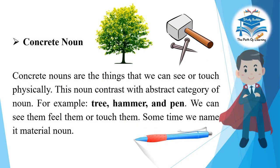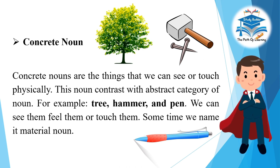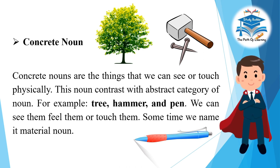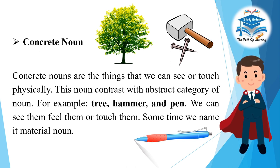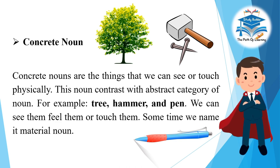Concrete noun: Concrete nouns are things that we can see or touch physically. This noun contrasts with the abstract category of noun. For example: tree, hammer, and pen — we can see them, feel them, or touch them. Sometimes we also call it a material noun.